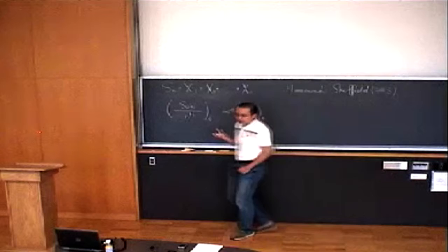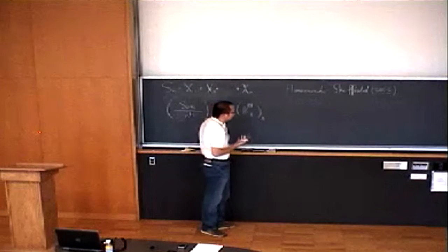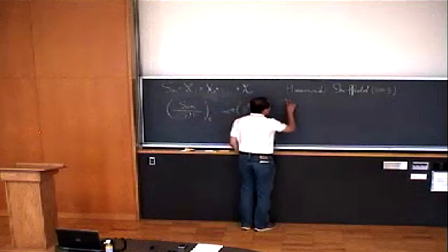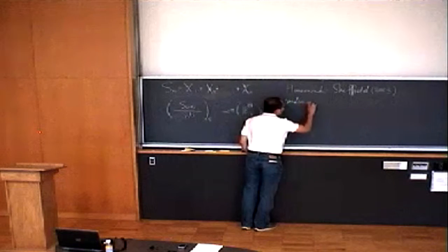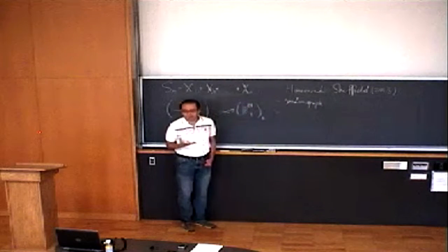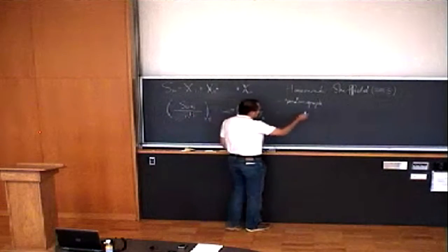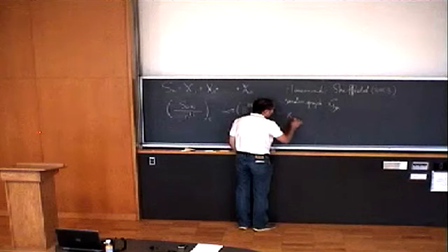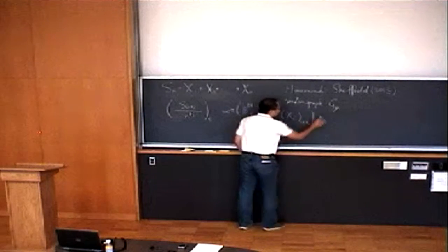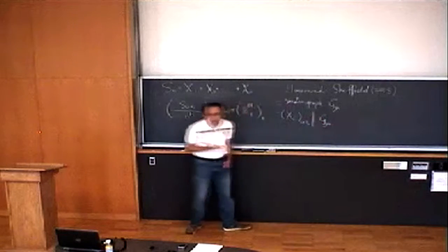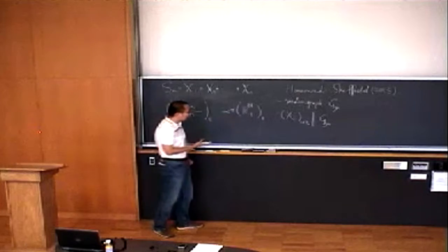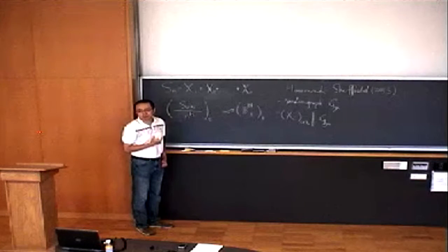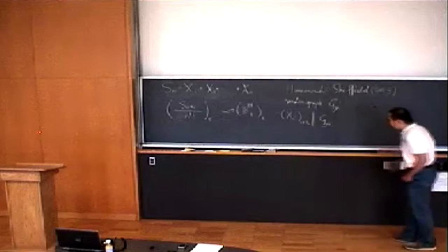This is a very recent paper, so maybe not all of us are familiar with it. Let me start talking about this model. Basically this model has two steps. The first step is we want to construct a random graph. The random graph structure will determine the dependence structure of my random variables x_i, which will show up in this partial sum, and then we have weak convergence to fractional Brownian motion.